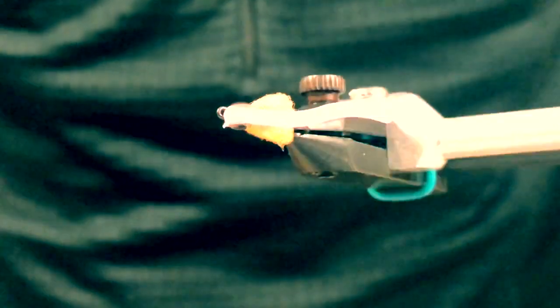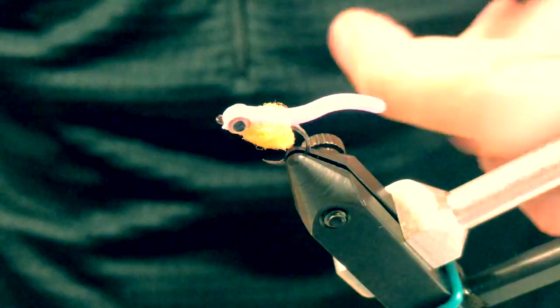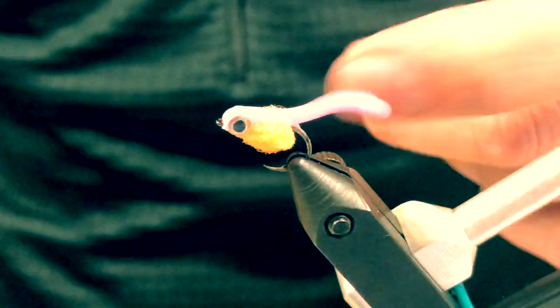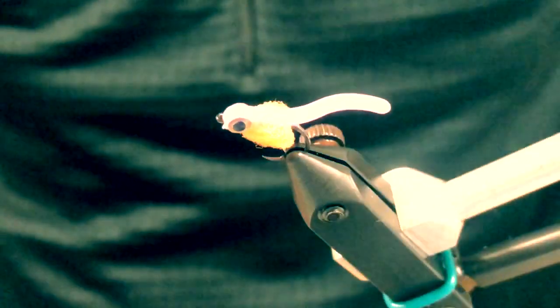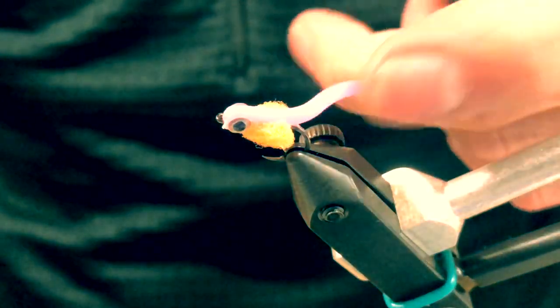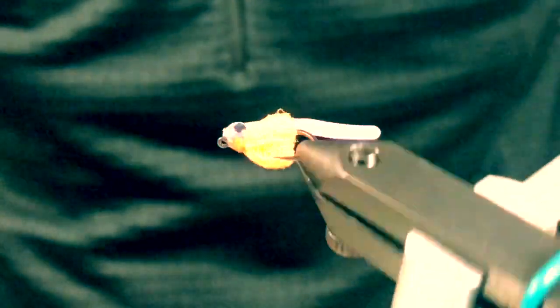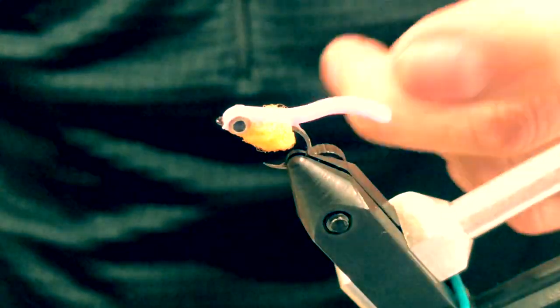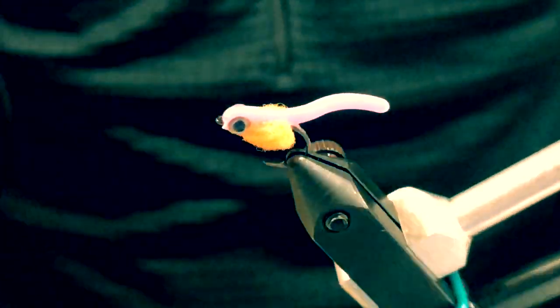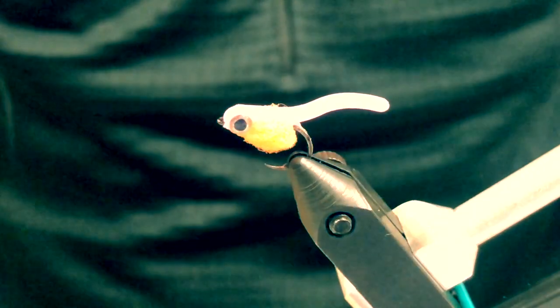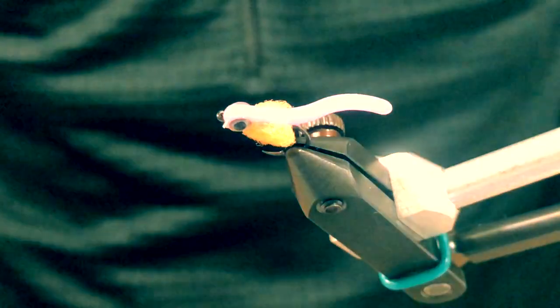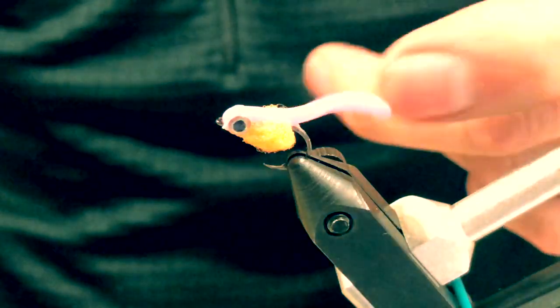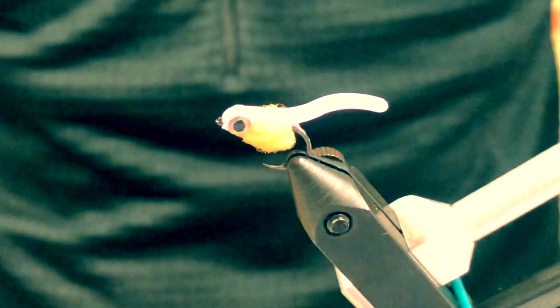The trout and steelhead really like them. This material is that squirmy worm material—you can see how much movement this has, and that's a good trigger for the fish. It's fun to fish these things because you can fish them either like a nymph or you can kind of swing them on the end of your drift.